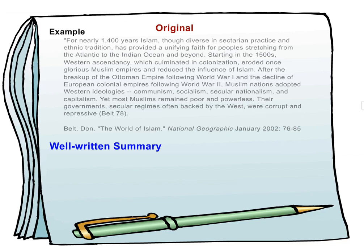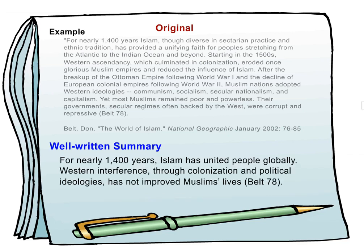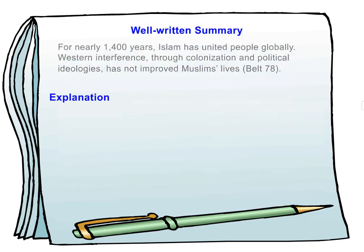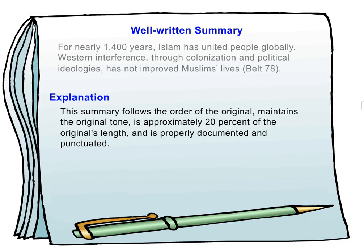Well-written summary. For nearly 1400 years, Islam has united people globally. Western interference through colonization and political ideologies has not improved Muslims' lives. Explanation. This summary follows the order of the original, maintains the original tone, is approximately 20% of the original's length, and is properly documented and punctuated.